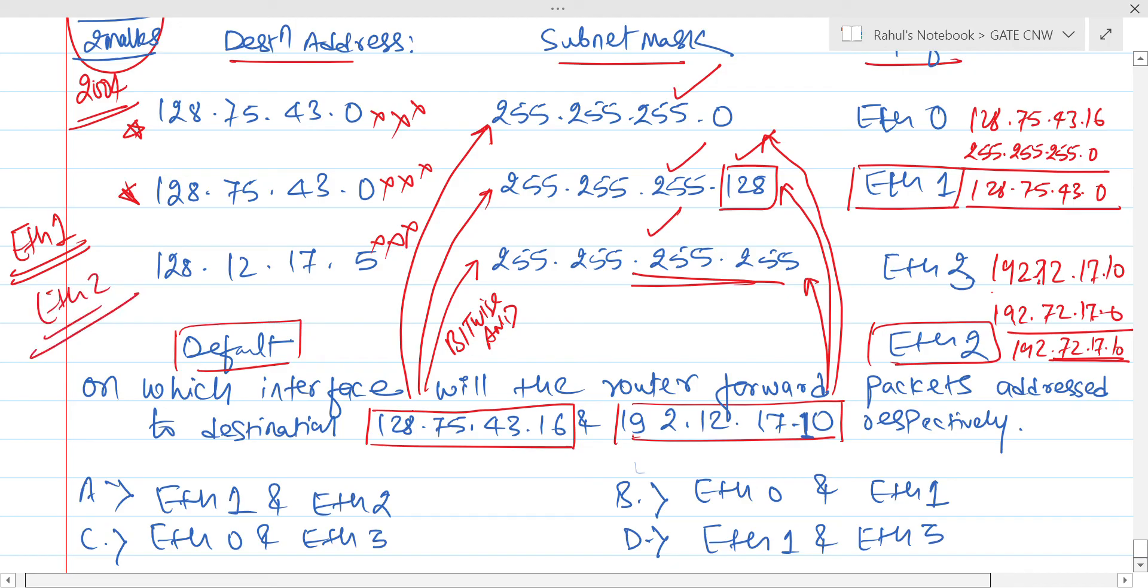So we can say that option A is the correct answer. The router will forward the packet for ethernet one and ethernet two respectively, because here we have performed bitwise AND operation. It is matched. It is matched. It is matched.